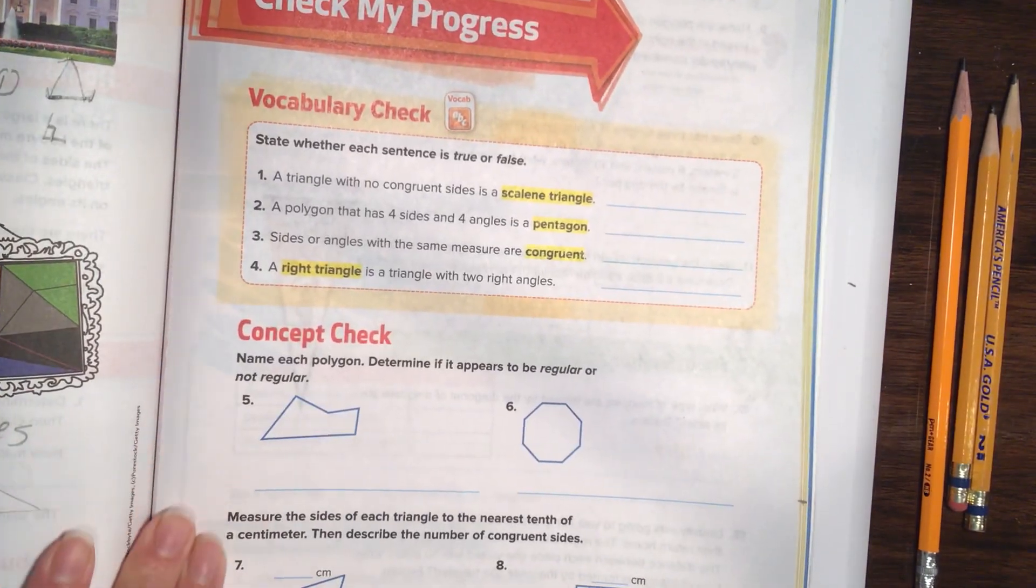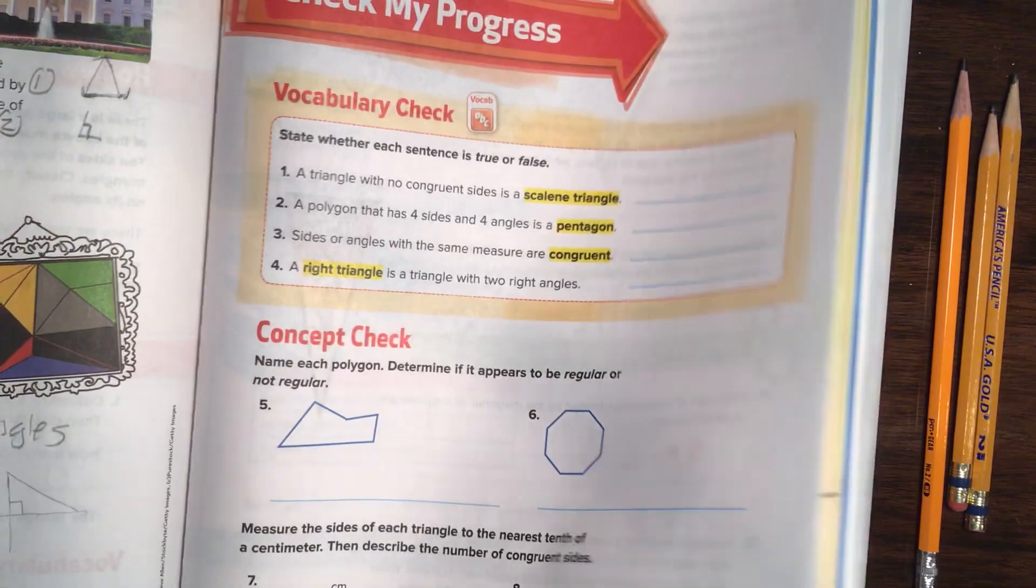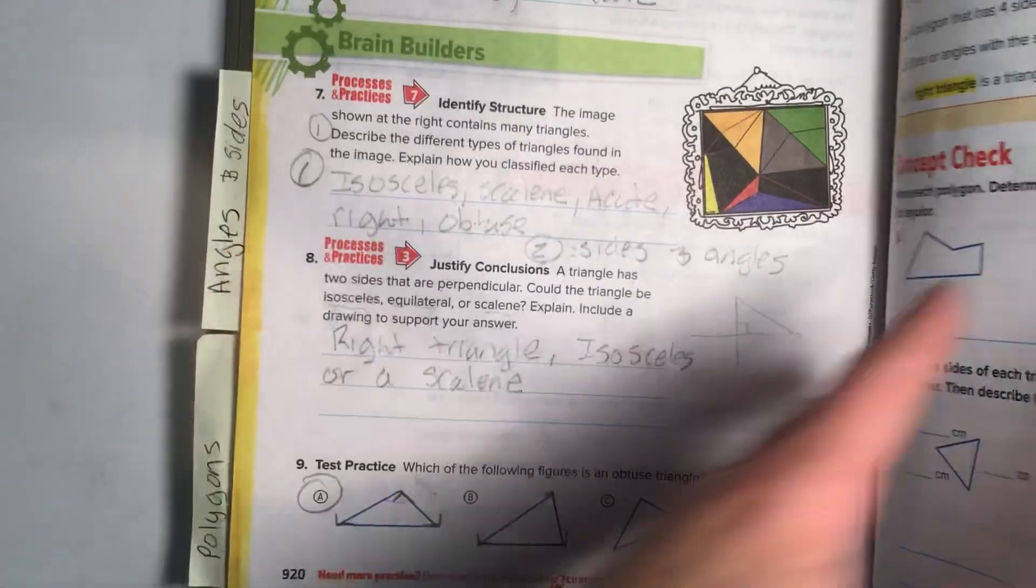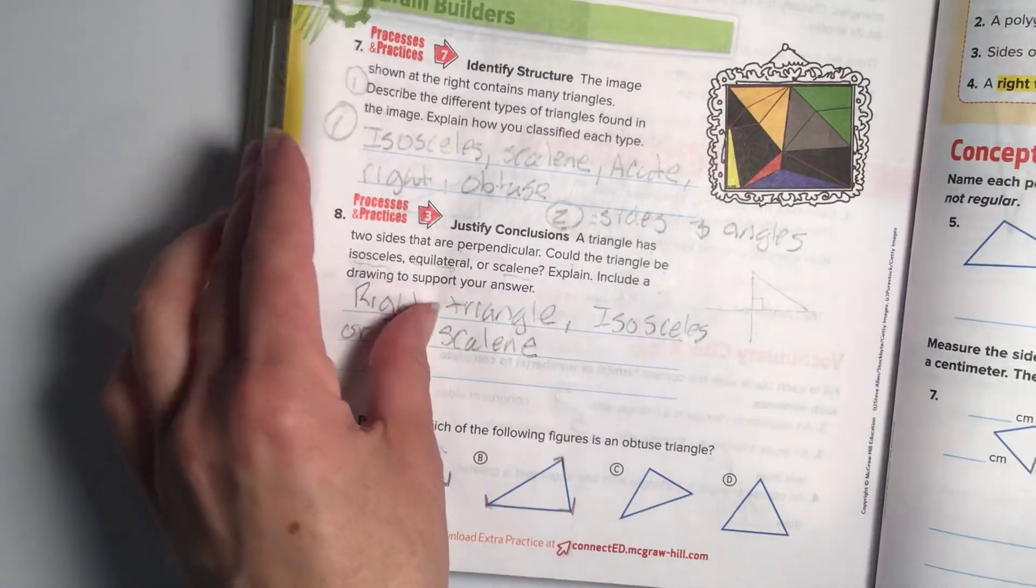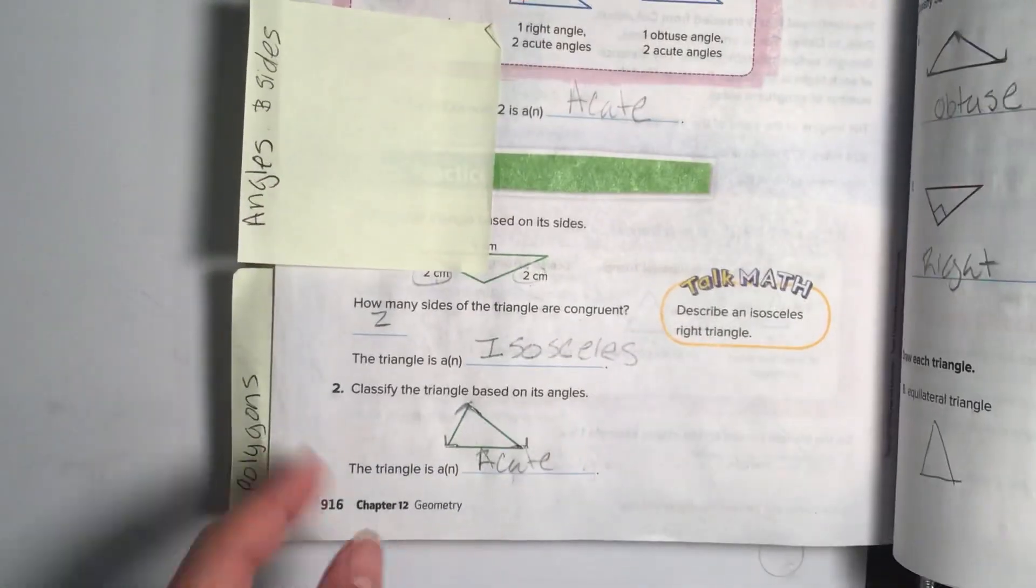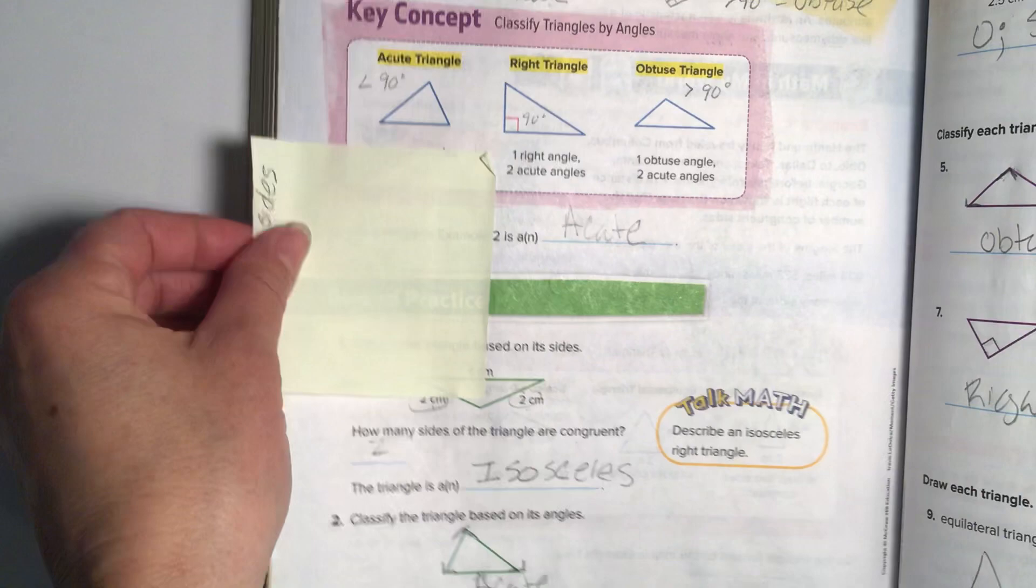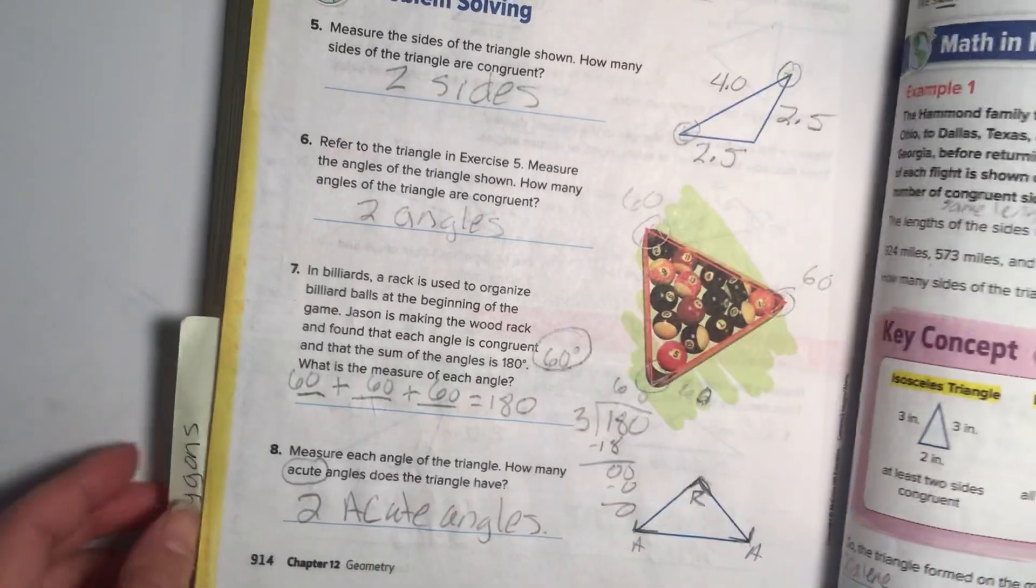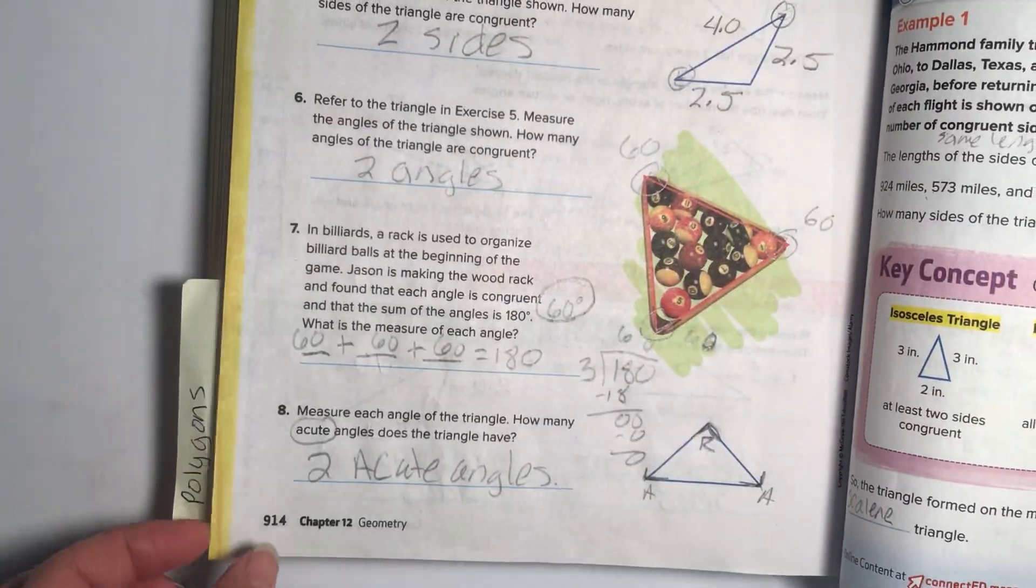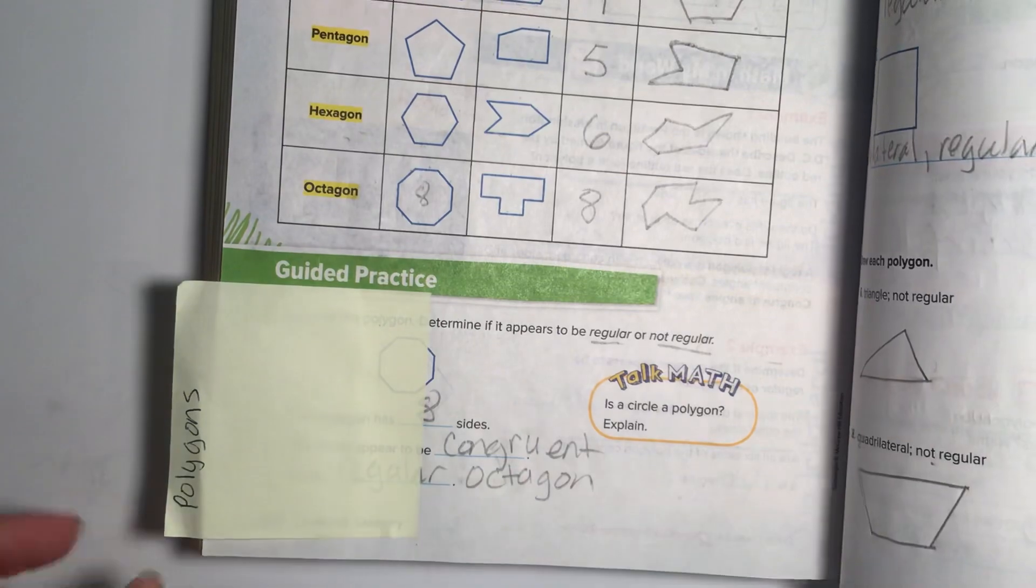A couple of helpful things that will help you is hopefully you guys put sticky notes on some of these pages. Sticky notes on page 916 because it talks about classifying triangles by angles, and on the back side, classifying it by sides. Then also you're going to need a sticky note on the polygon page, and just for future reference, that is page 904.